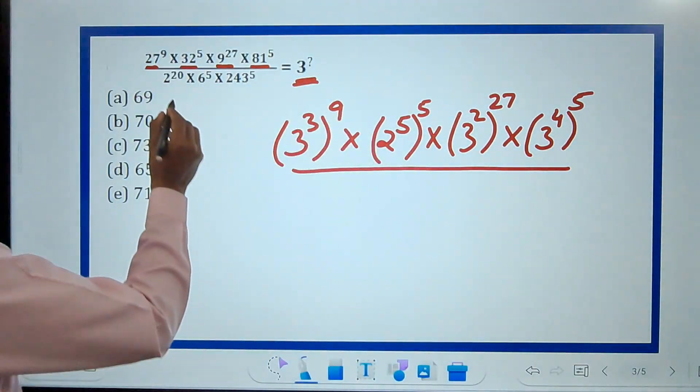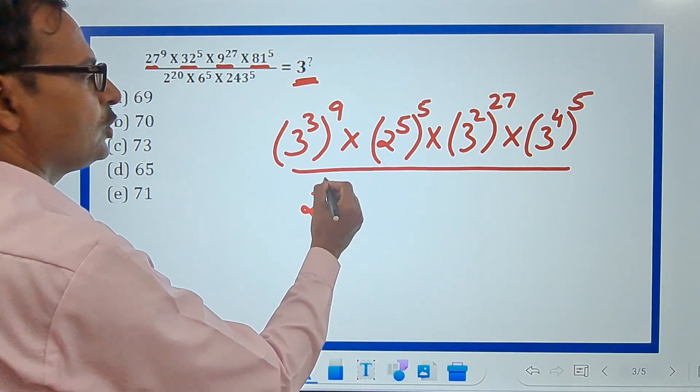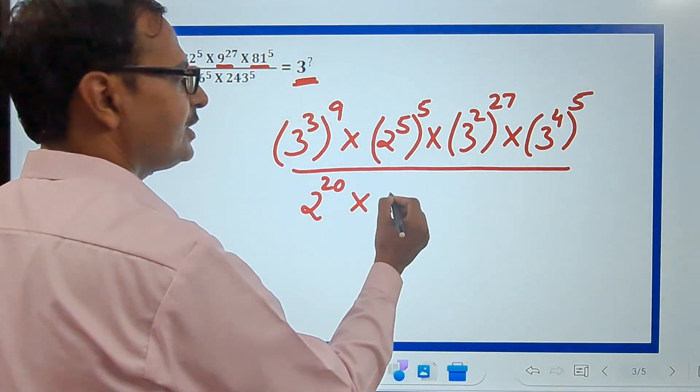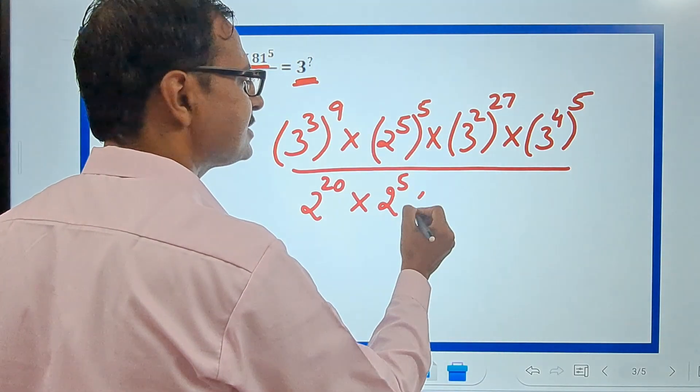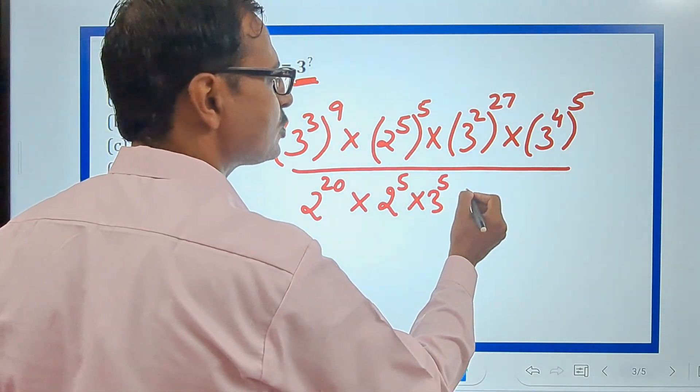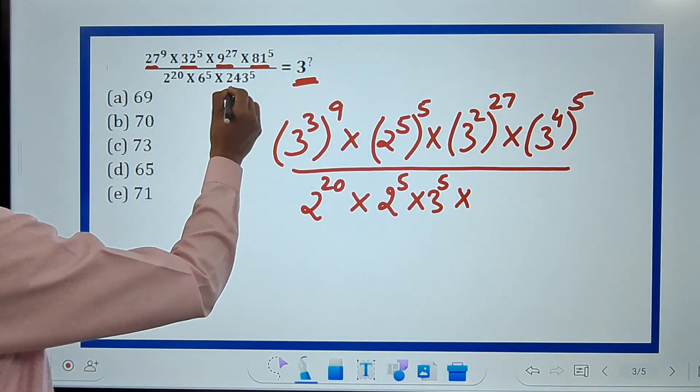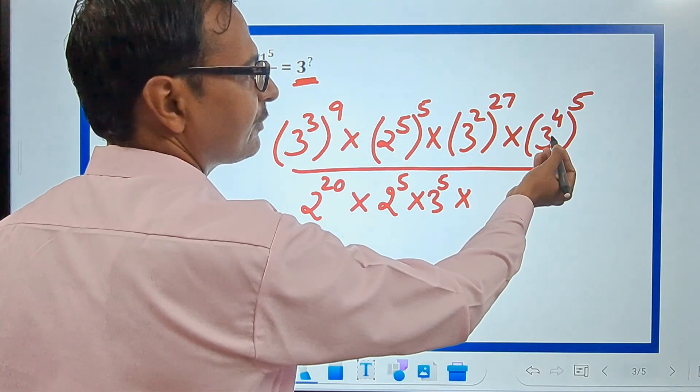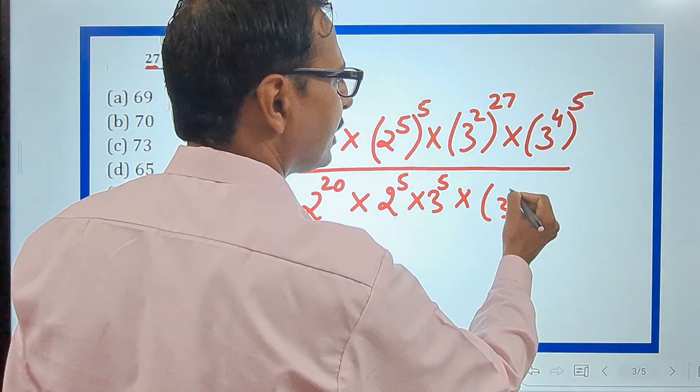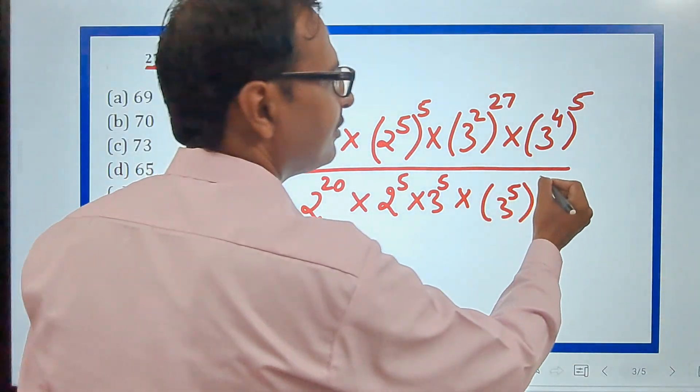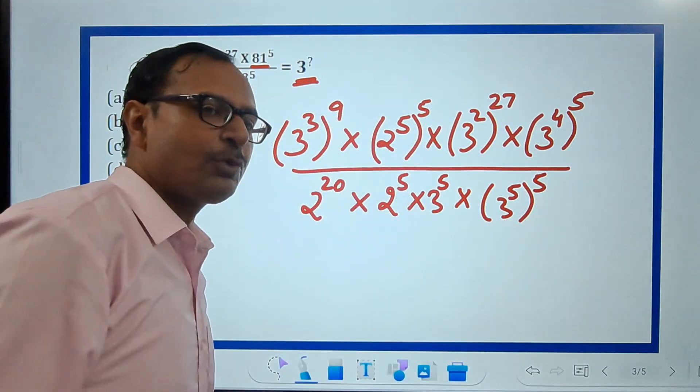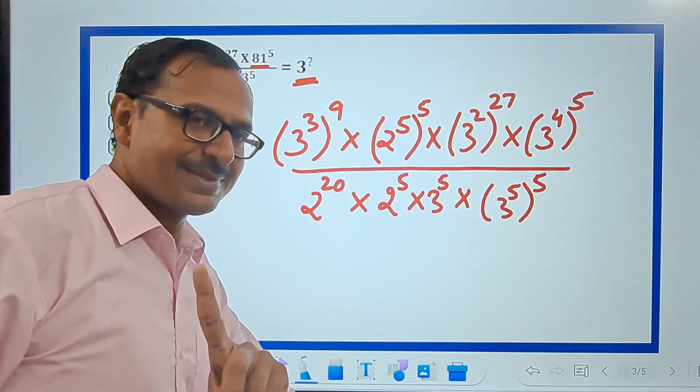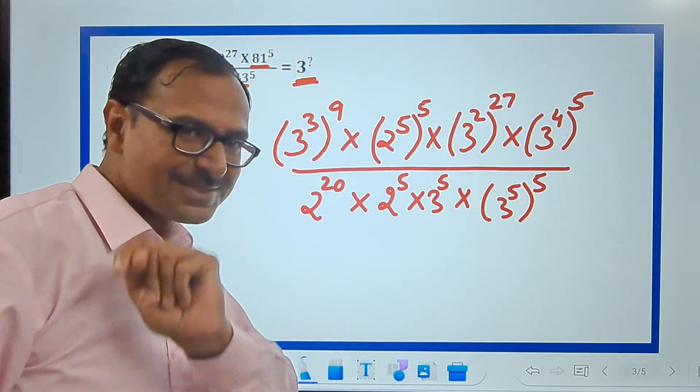In the denominator we have 2 raised to power 20, which I can't change because it's prime. 6 raised to power 5 is 2 raised to power 5 times 3 raised to power 5. Now this is the first step—you have to be very quick in resolving everything to a prime base.